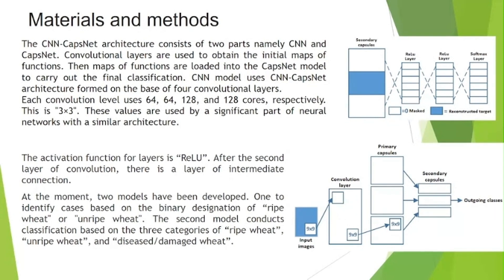At present, two models have been developed. The first identifies cases based on the binary designation of ripe wheat or unripe wheat. The second model conducts classification based on three categories: ripe wheat, unripe wheat, and diseased or damaged wheat.